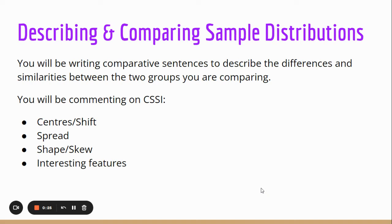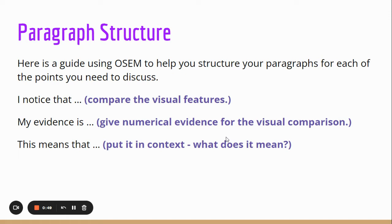We use OSiM — obvious, specific evidence, meaning — to describe within these particular things. If you don't know what they are, you can have a look at the videos from Dr. Nick. Our paragraph structure in this particular one: we want to make sure we cover all our bits and pieces, and we always have to make sure that we talk about our graph.